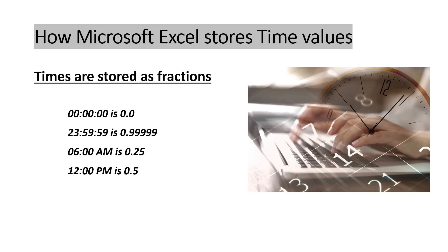Microsoft Excel stores times as fractions and it starts with zero. At 12 AM — 0 hours, 0 minutes, and 0 seconds — that is considered as 0.0. When the day ends, that is 23 hours, 59 minutes, 59 seconds, that is considered as 0.99999. A whole number 1 is considered as one full day, so 0.5 is half of the day — that is 12 PM — and 0.25 is one fourth of a day, that is 6 AM in the morning.